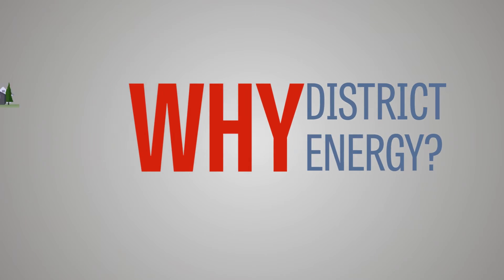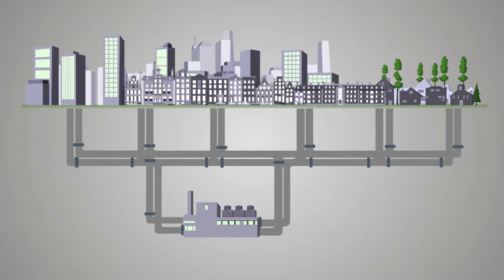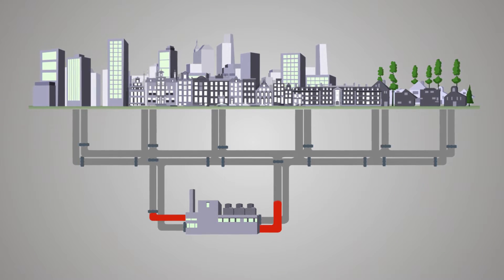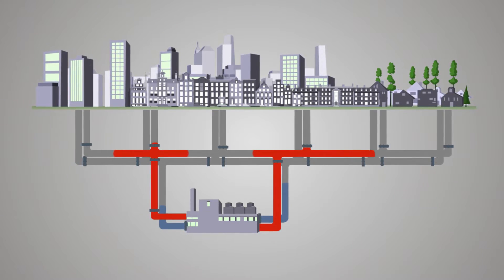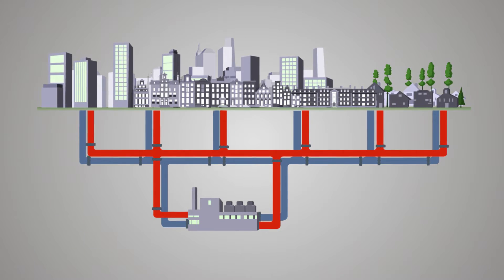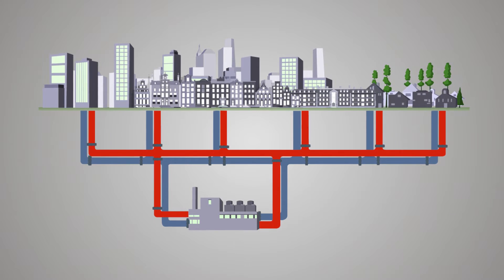Why district energy? District energy systems include highly insulated underground thermal piping networks that transmit steam, hot water, and chilled water from a central plant or plants to heat and cool multiple buildings in a city, community, or campus.